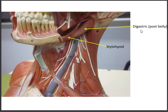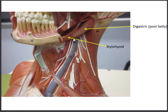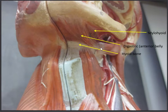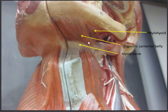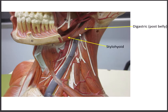Let's start with the digastric. 'Di' means two, 'gastric' means belly, so there are two bellies. The posterior belly comes from the mastoid process and runs down toward a central tendon. Then the tendon picks up and goes to the inside of the mandible in the mental region — that's the anterior belly. Looking from underneath the jaw, here's the anterior belly going to the underside of the mandible, and then here would be the back part, the posterior belly of the digastric.